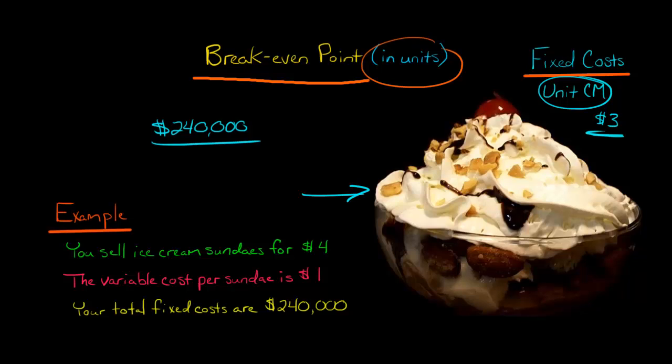Think about it like this: every time you sell one of these beautiful sundaes, you get $3 that you generate. After covering your variable cost, there's $3 left over that can go toward your company's fixed costs. So we're going to divide by that $3.